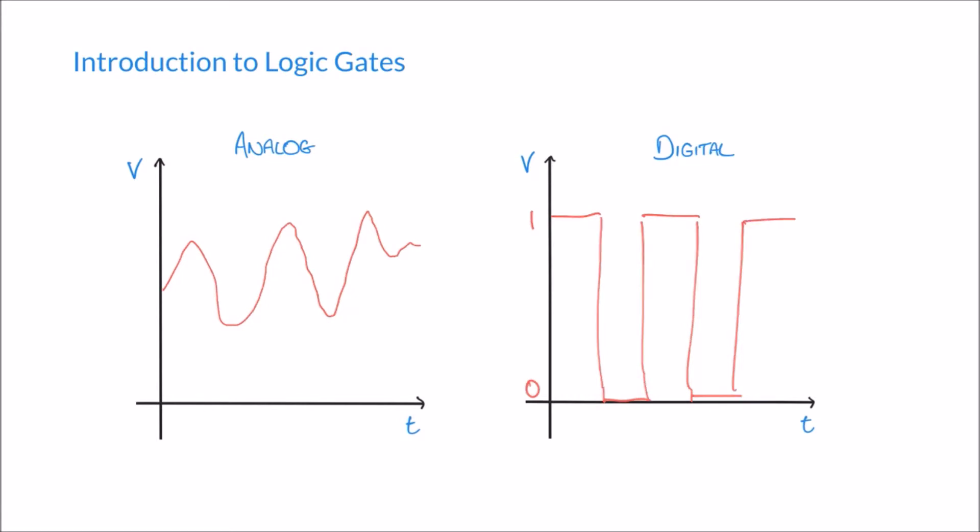Logic gates are components that can process these ones and zeros in order to produce outputs depending on the combination of inputs. Let's have a look at some of the basic types of logic gates and how they function.